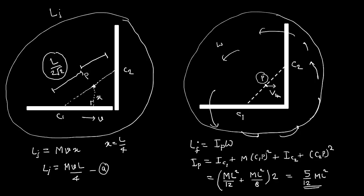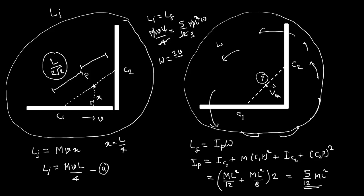Now setting Li = Lf: mvl/4 = (5ml²/12)·ω. Solving — the 4 moves across, m and l cancel — and you get ω = 3v/(5l). So this is the angular velocity of the system after the collision.